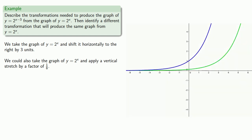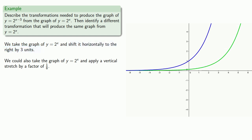There are two ways we can produce this graph. We can take the graph of y equals 2 to the power x and shift it horizontally to the right by 3 units, or we can take the graph of y equals 2 to the power x and apply a vertical stretch by a factor of one-eighth.